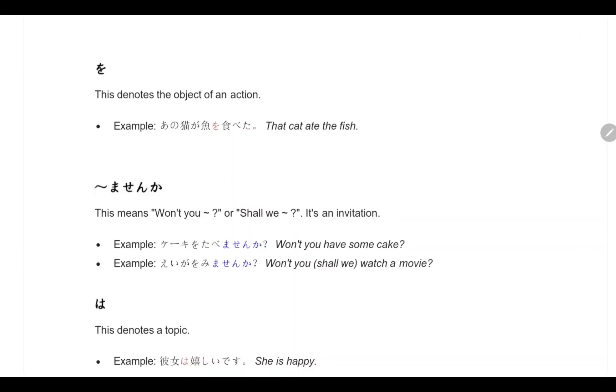Coming to the next thing. This denotes the object of an action. For example, Anohiko ga sakana wo tabeta. The cat ate the fish. To denote the object, what it has eaten. The cat ate the fish. Neko is cat, sakana is fish.